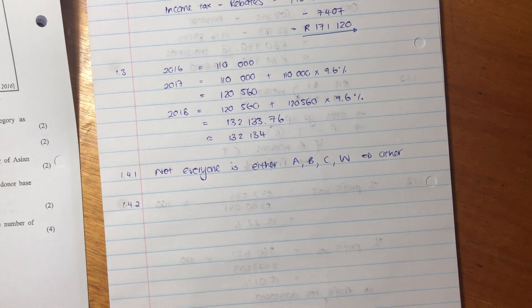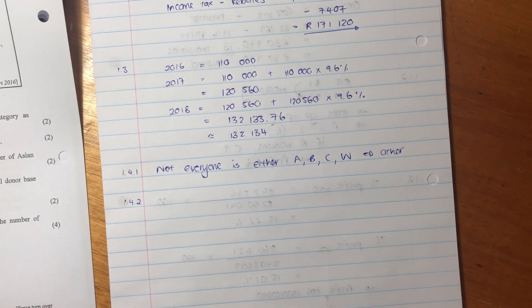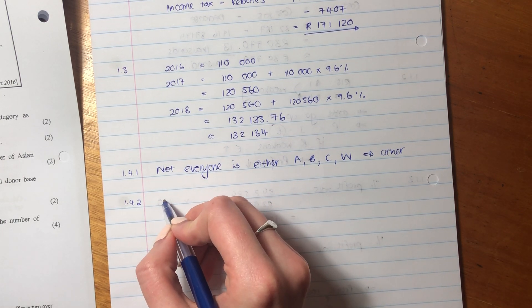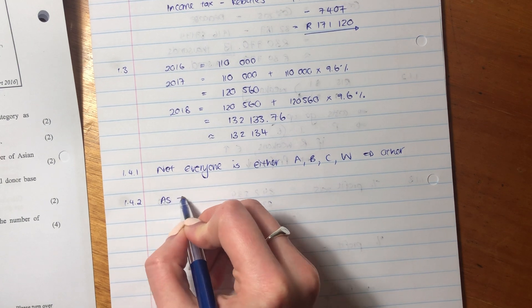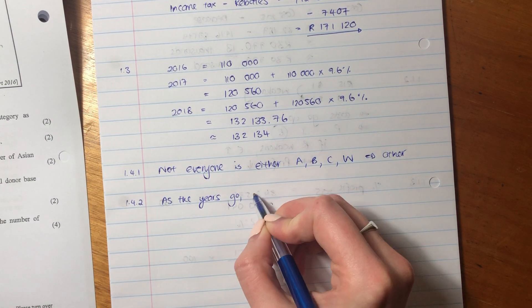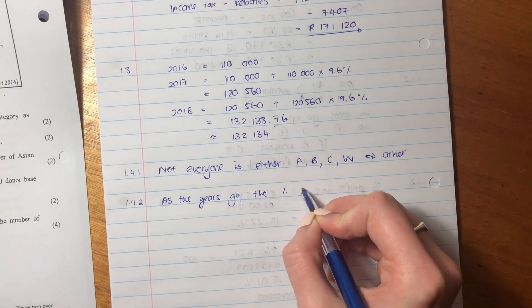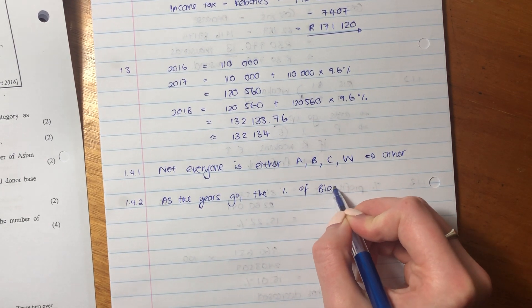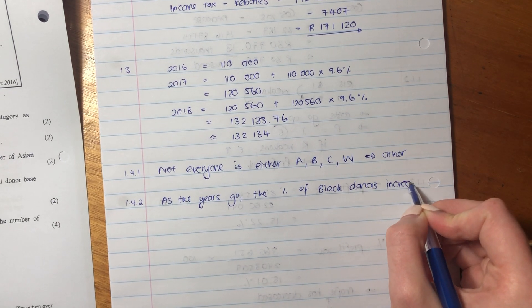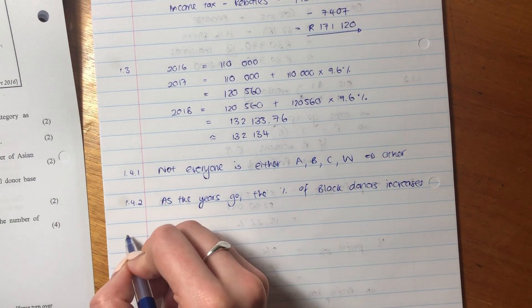So what we see is as the years increase, as we go from 2014 to 2016, we see that the percentage of black donors increase. So let's write that down. This is just a data interpretation. They're wanting, they're basically saying can this person who's writing this paper actually understand the data we've given them? So it's as the years go, the percentage of black donors increases. Simple as that.